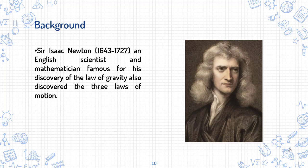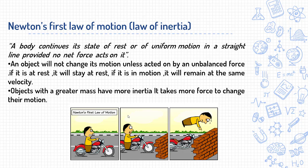Moving towards our today's topic — Sir Isaac Newton, an English scientist and mathematician famous for his discovery of the law of gravity, also discovered the three laws of motion. Newton's first law of motion, also known as the law of inertia, states that a body continues its state of rest or of uniform motion in a straight line provided no net force acts on it. An object will not change its motion unless acted on by an unbalanced force.